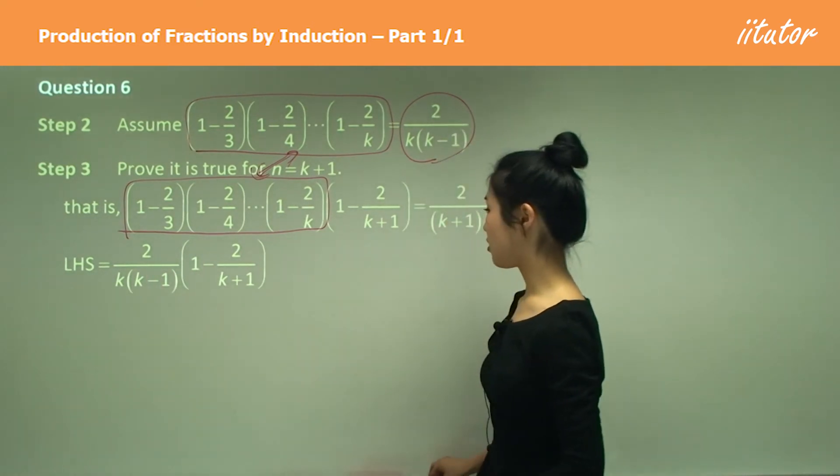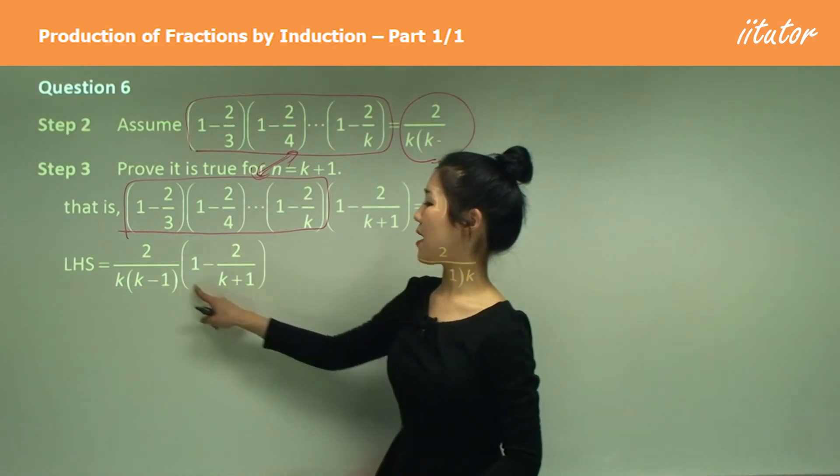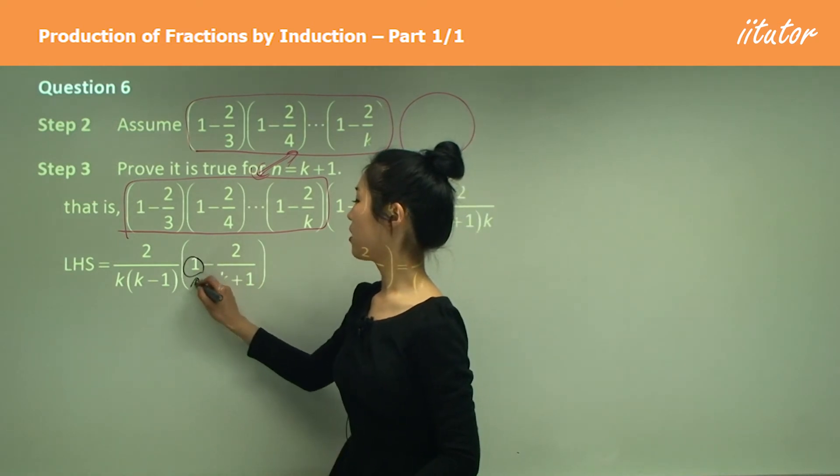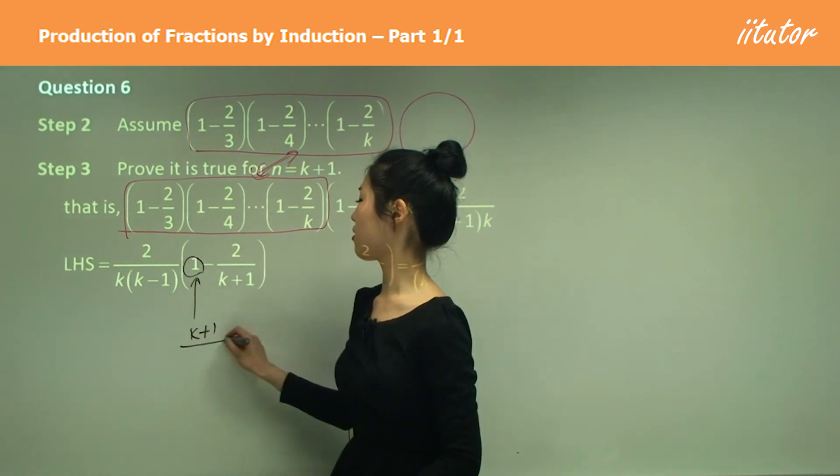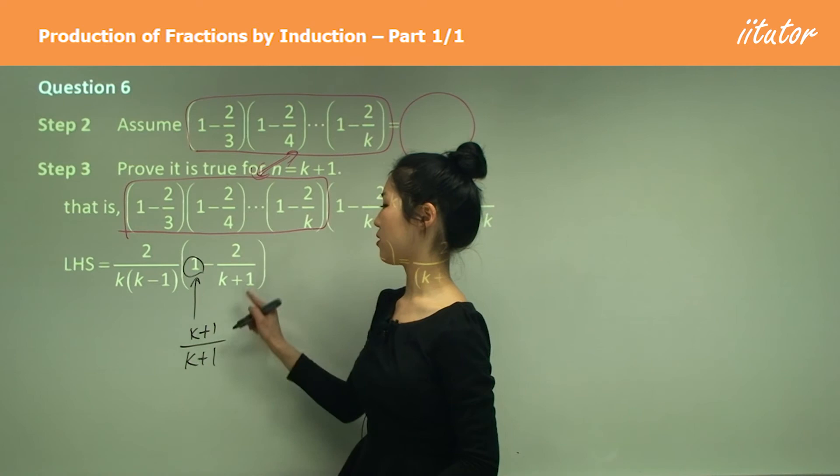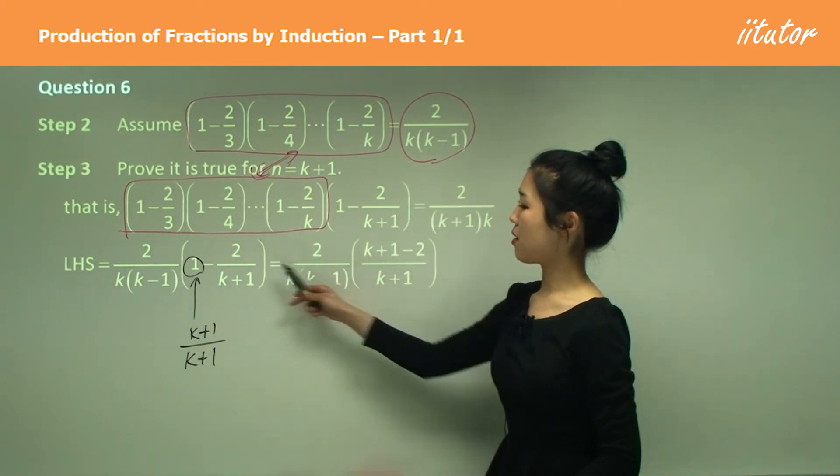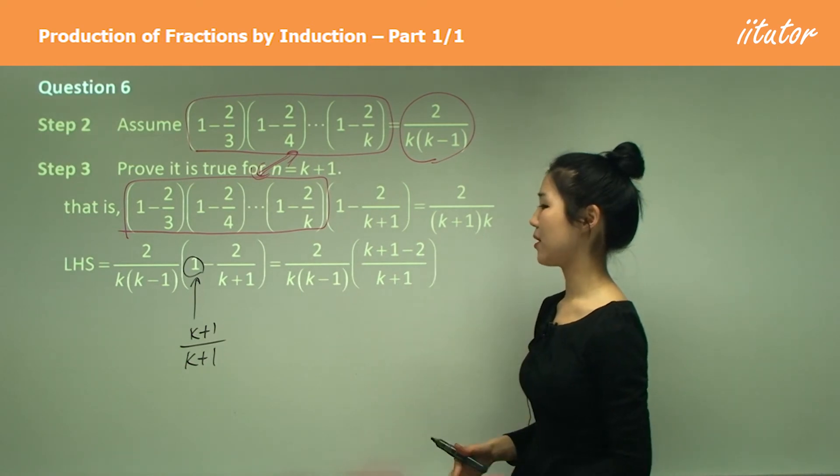And I want to make first this into a single fraction. I know that 1 is k plus 1 over k plus 1. I just did that so I have the same denominator as that. So it's going to be k plus 1 minus 2, or the whole thing over k plus 1.